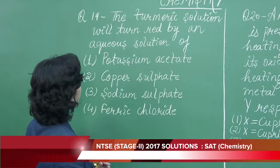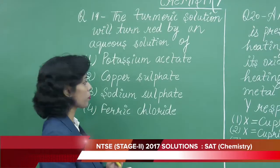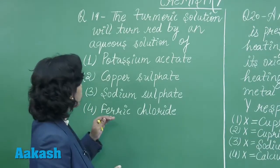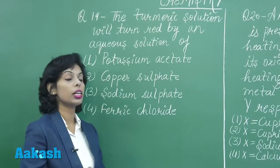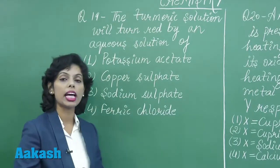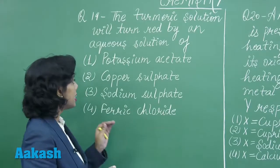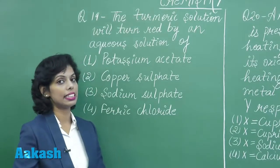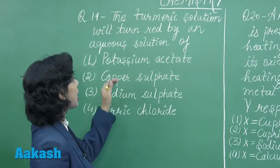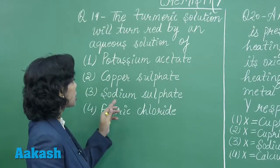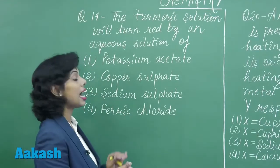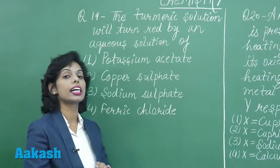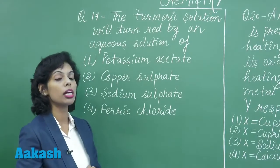The options we have here are: potassium acetate, copper sulphate, sodium sulphate, and ferric chloride. Let us consider the first option — potassium acetate. When we make the aqueous solution of potassium acetate, it gets dissociated and forms potassium hydroxide and acetic acid, because it is the salt of acetic acid and potassium hydroxide. Potassium hydroxide is a strong base while acetic acid is a weak acid. When we have the salt of a strong base and a weak acid, the solution will be basic.